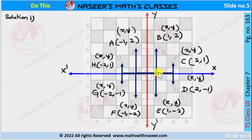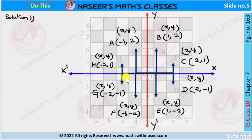The second move is 1 right and 2 upside, so B coordinates are (1, 2). Next, 2 right and 1 upside, so C coordinates are (2, 1). Next, 2 right and 1 downside, so D coordinates are (2, −1). The next move is 1 right and 2 down, so E coordinates are (1, −2). The next move is 1 left and 2 downside, so F coordinates are (−1, −2). The next move is 2 left and 1 down, so G coordinates are (−2, −1). The next move is 2 left and 1 up, so H coordinates are (−2, 1).